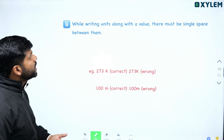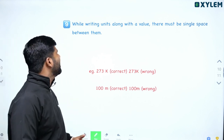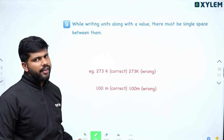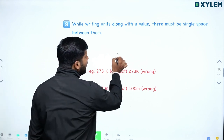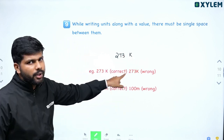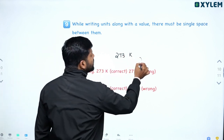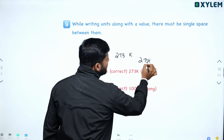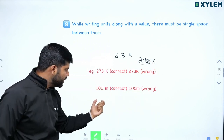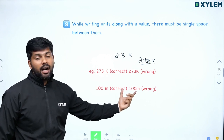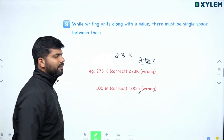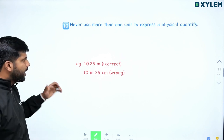While writing values, there must be a single space between the value and the unit. For example, write '273 K' with a space — leaving a space before the unit symbol. Similarly, '100 m' with a space. Leaving no space or running them together is wrong.